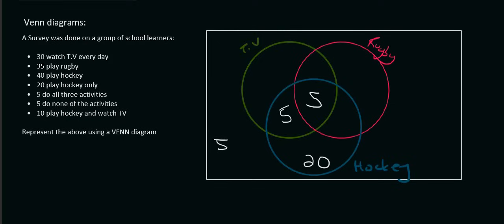Now we're starting to get somewhere because check this out. The blue circle is hockey, and it's almost complete. We know that there are 40 people who play hockey in total. 20 of them are there. 5 of them are there. 5 of them are there. So that's already 30. So we can put a 10 over there.